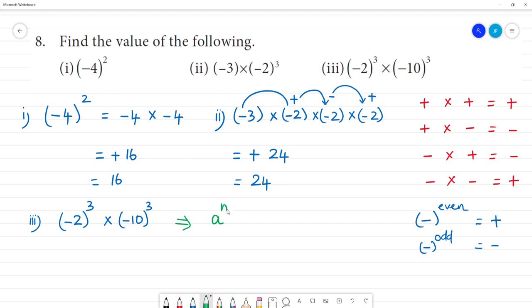When you have the same power, but the base is different, this equals a multiplied by b, the whole to the power m.